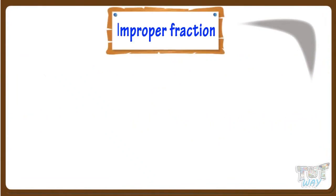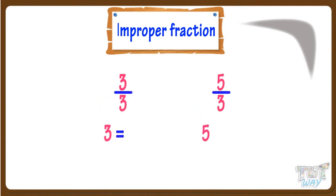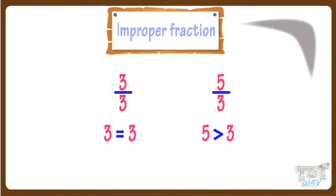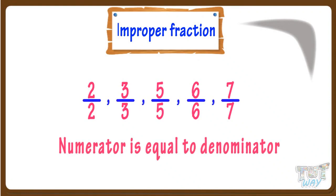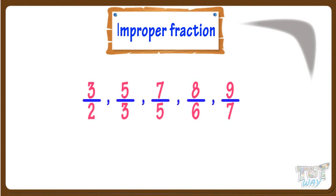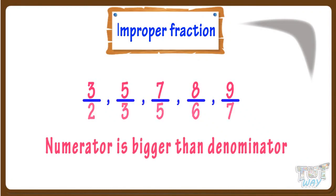Let's first learn what are improper fractions. Fractions where the numerator is equal to or greater than the denominator are called improper fractions. These are examples of improper fractions as the numerator is equal to denominator, and these are also examples where the numerator is bigger than the denominator.